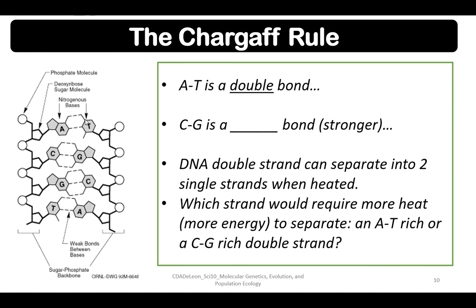Chargaff's rule: adenine is always paired with thymine with a double bond, while cytosine and guanine form a triple bond, which is much stronger. We will continue this in video number two.